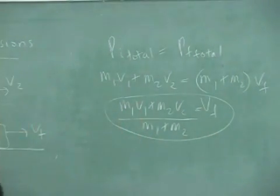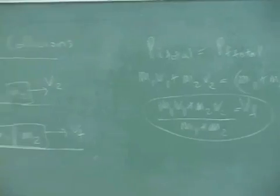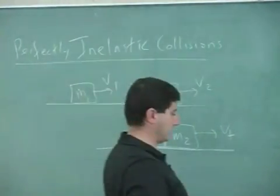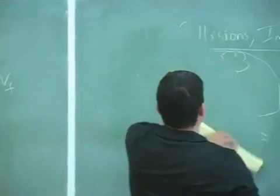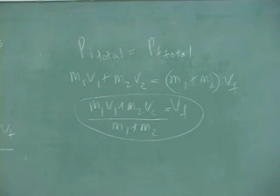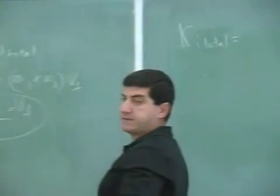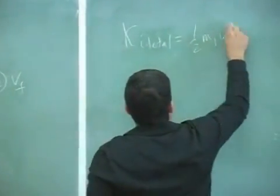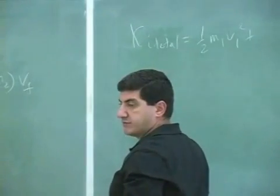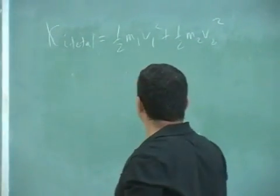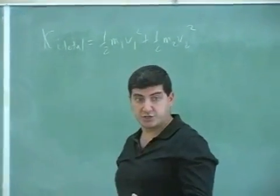So this is an inelastic collision. It can be shown that in this case the kinetic energy is lost. The kinetic energy initial total equals the kinetic energy of the first object, ½·m1·v1², plus the kinetic energy of the second object, ½·m2·v2².